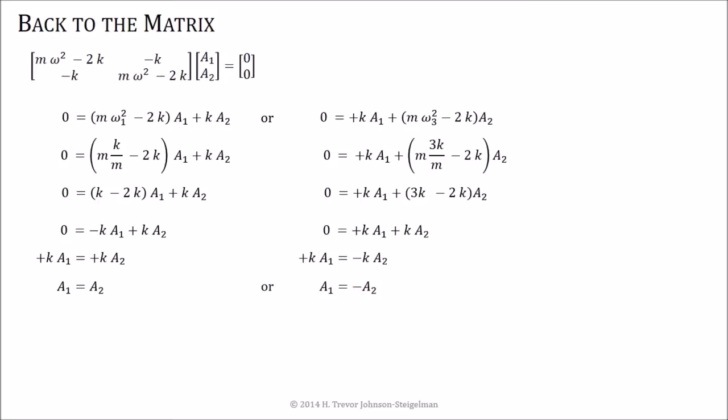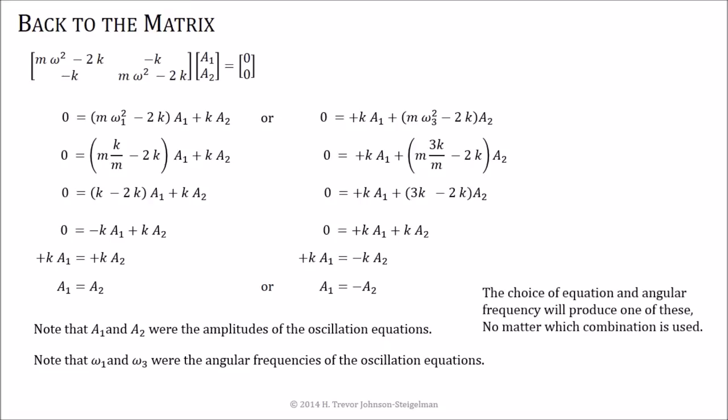Or, using the second equation, it turns out with a little bit of algebra that A1 can equal negative A2. So again, we've got two solutions. We had two equations. We essentially had four unknowns. X1, X2, Omega 1, or Omega 3. And A1 and A2 were the amplitudes of the oscillations. Omega 1 and Omega 3 were the angular frequencies of the oscillation equations. And we could have done any combination here with omegas into the equations. As long as we're consistent and we work it through, there are four sets of solutions that will work here. And it doesn't matter which combination we use. We either find out that A1 is equal to A2 or A1 is equal to the negative of A2.